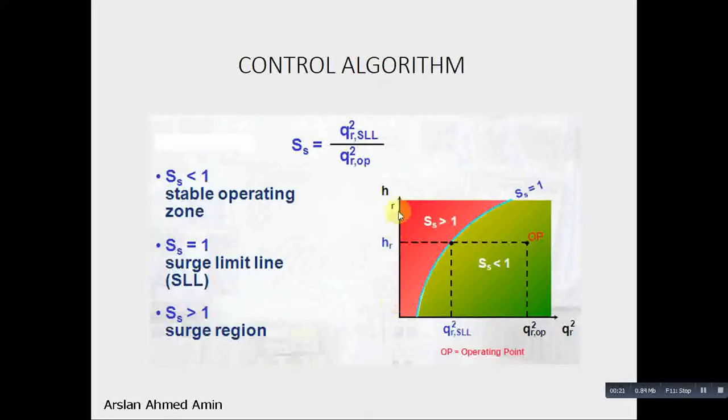So this is how the surge map would be built in the controller. This is the reduced polytropic height and this is the reduced flow. And this is your surge limit line. This is the red region below this line, and above this line, the upper side, which is the green region, is our safe region.